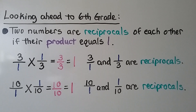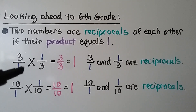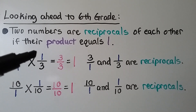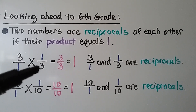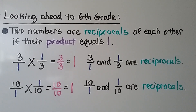You'll learn more about reciprocals when you get into the beginning of sixth grade. Two numbers are reciprocals of each other if their product equals 1. We have 3 whole written as a fraction — 3 over 1. If we multiply it by its flipped upside-down version, 1 over 3, we get 3 thirds, which equals 1 whole. So 3 over 1 and 1 third are reciprocals of each other.